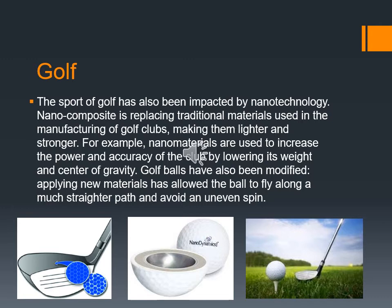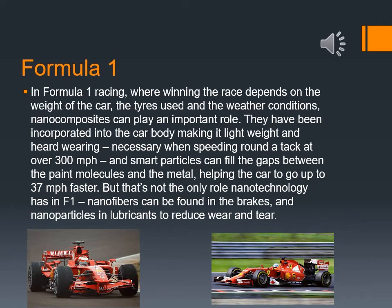In Formula One racing, where winning depends on the weight of the car, the tires used, and the weather conditions, nanocomposites play an important role. They have been incorporated into the car body, making it lightweight and hard-wearing — necessary when spending time on the ground at over 300 mph. Smart particles can fill the gaps between the paint molecules and the metal, helping the car go up to 37 mph faster. Nanofibers can be found in the brakes, and nanoparticles in lubricants to reduce wear and tear.